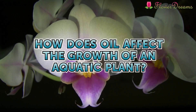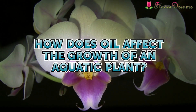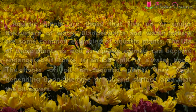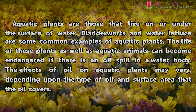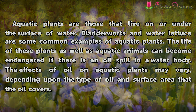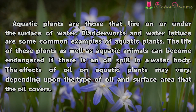How does oil affect the growth of an aquatic plant? Aquatic plants are those that live on or under the surface of water. Bladderwort and water lettuce are some common examples of aquatic plants. The life of these plants as well as aquatic animals can become endangered if there is an oil spill in a water body.